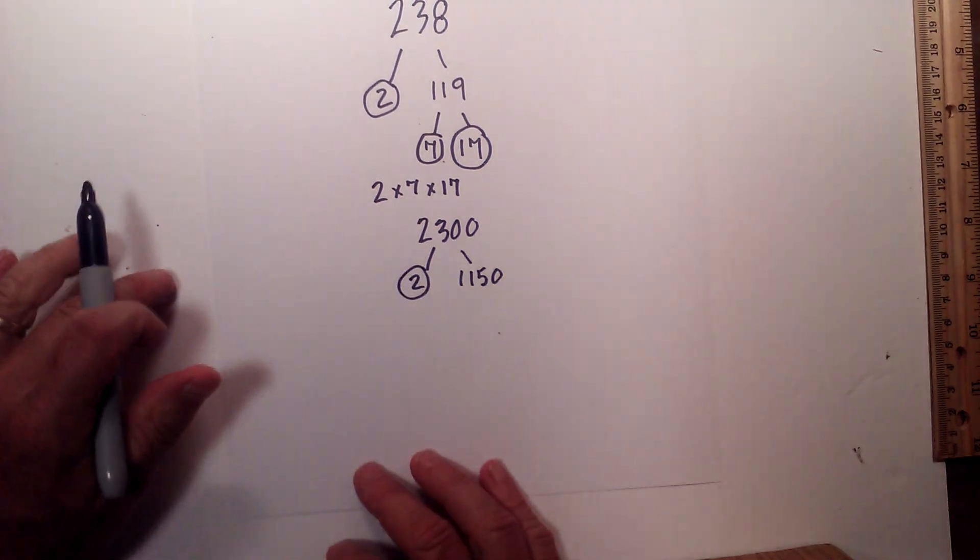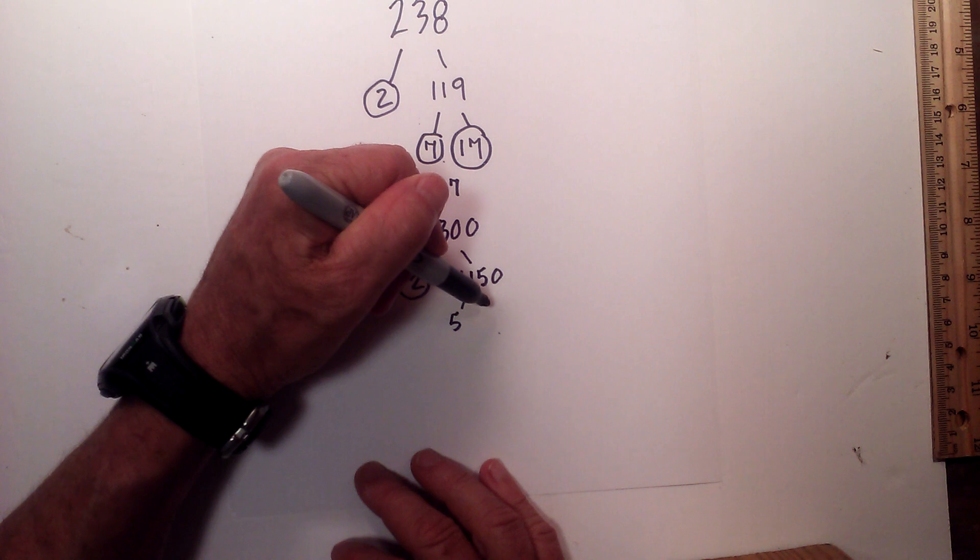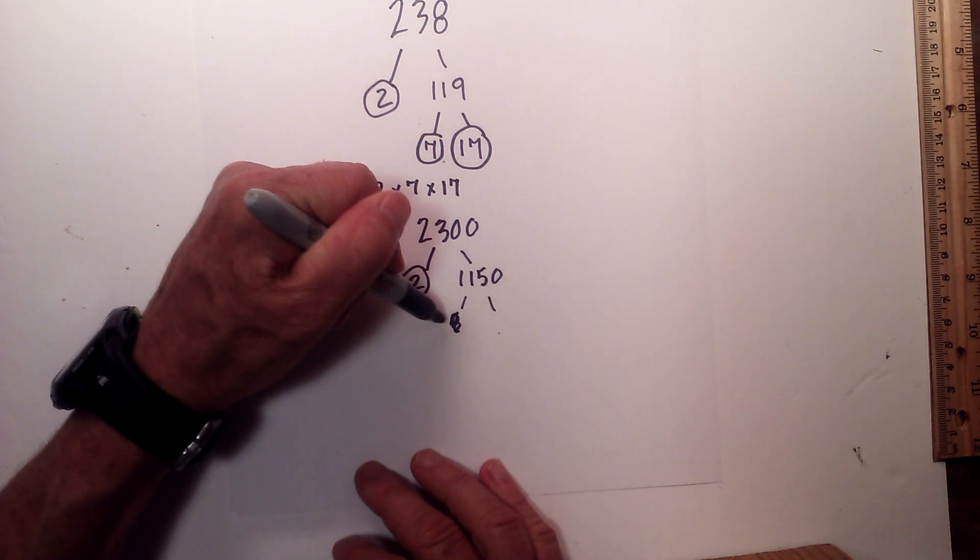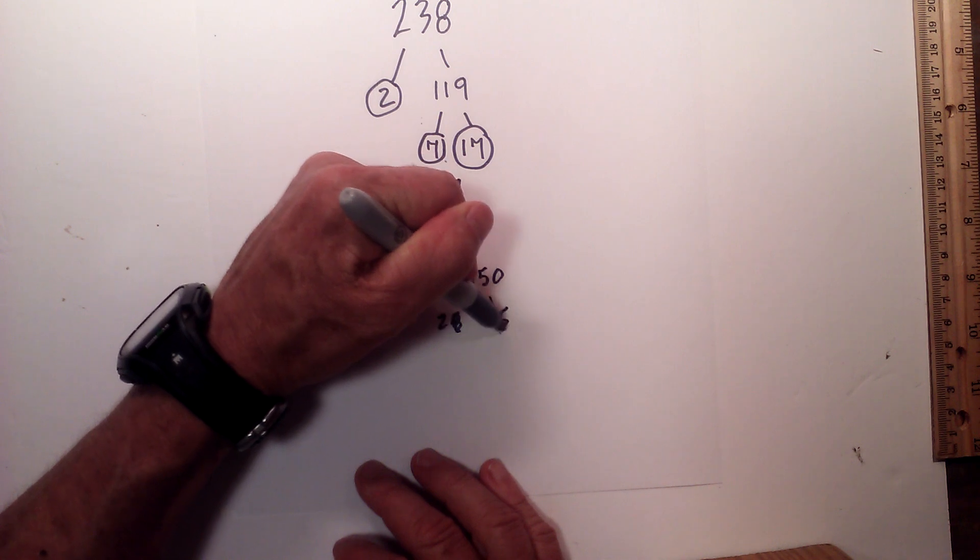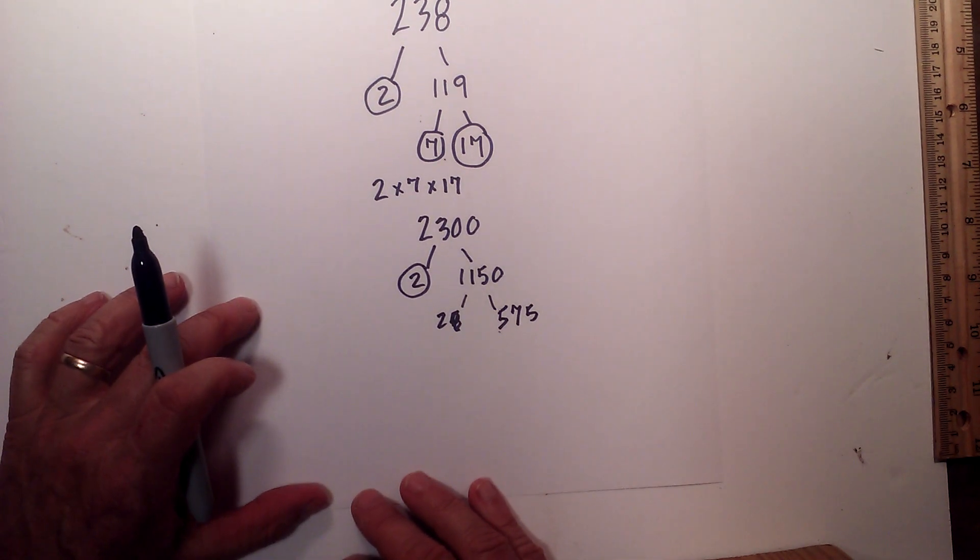Circle 2 because it is prime. 2 times 575 equals 1150.